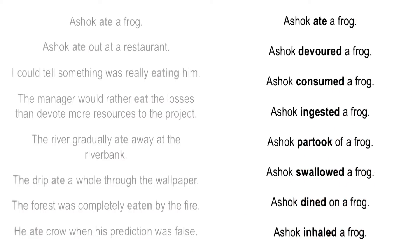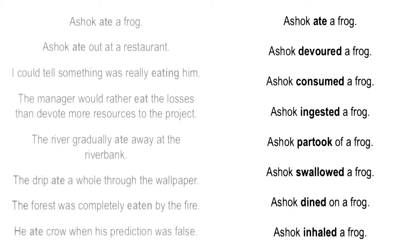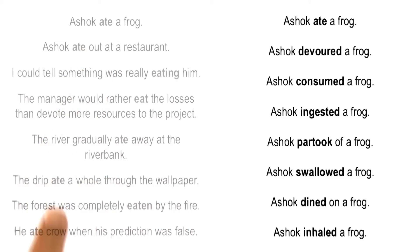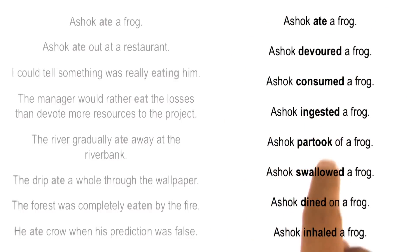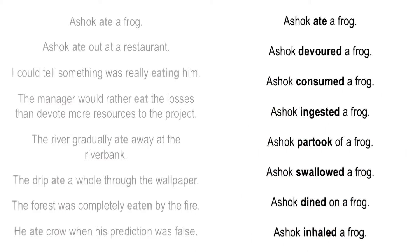There is one other thing that is important here, and that is the notion of context. One of the hardest things in AI is how do we bring context into account? In both of these cases, context is playing an important role. On the left side, context plays a role because we understand that the meaning of 'eat' is different in different sentences because the context of each is different. On the other side, we understand that the meaning of each of these words is practically the same because the context is practically the same.